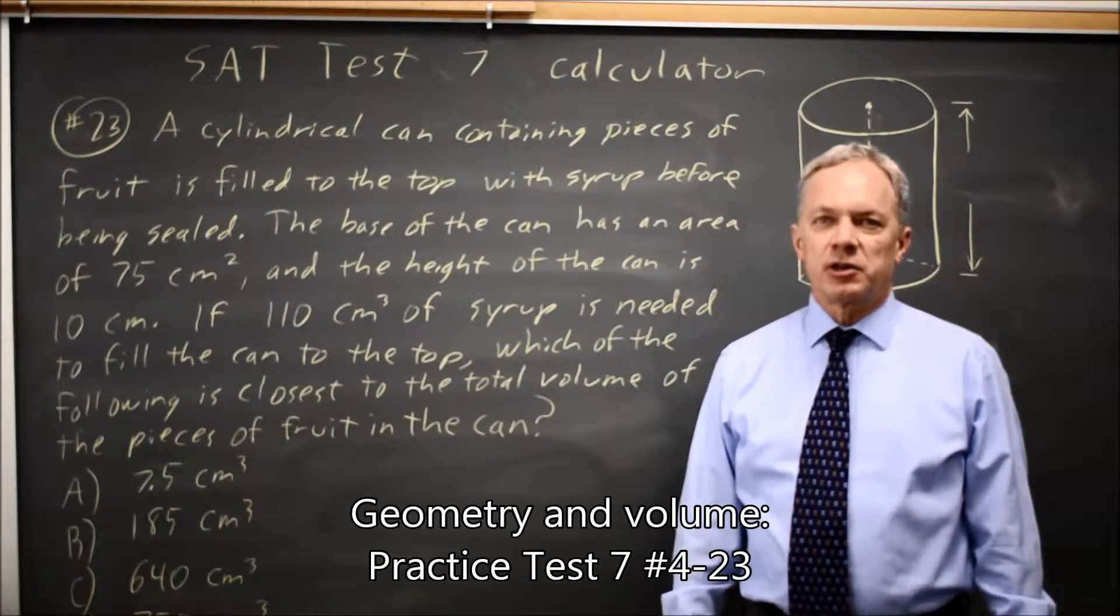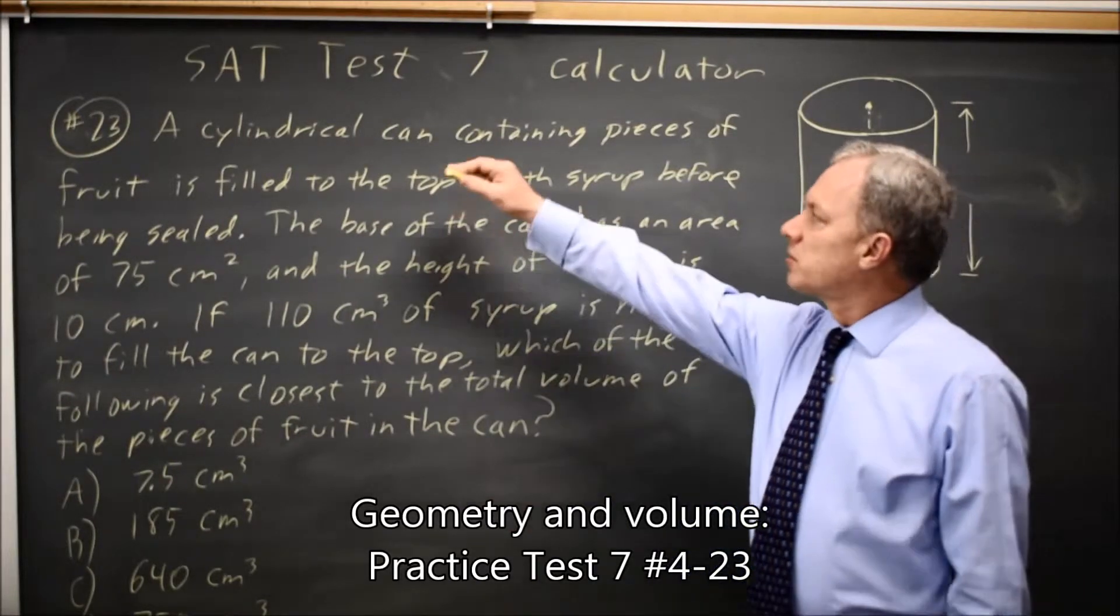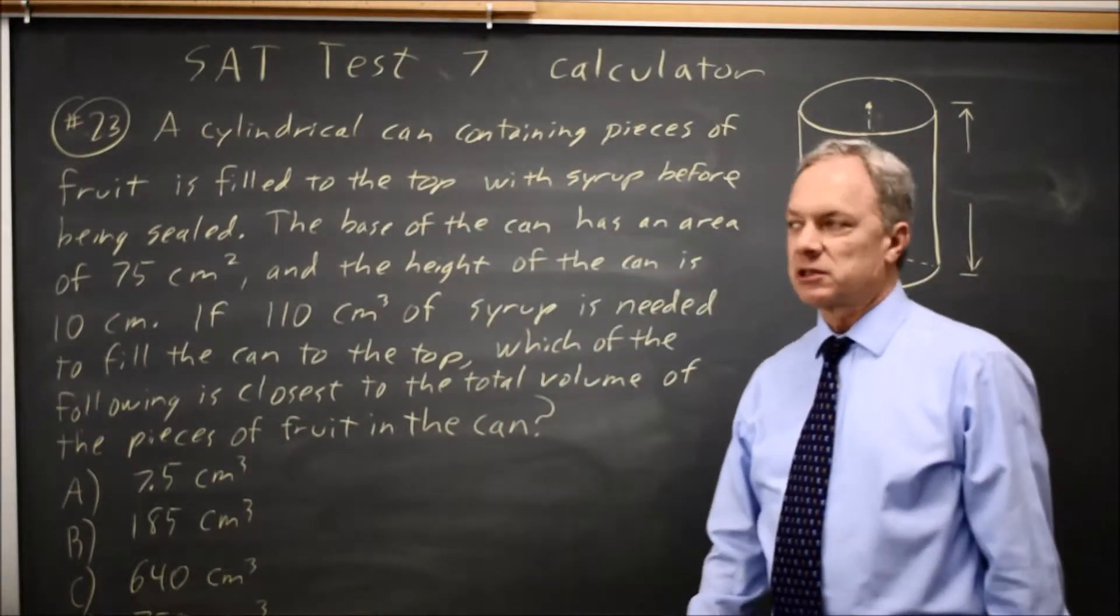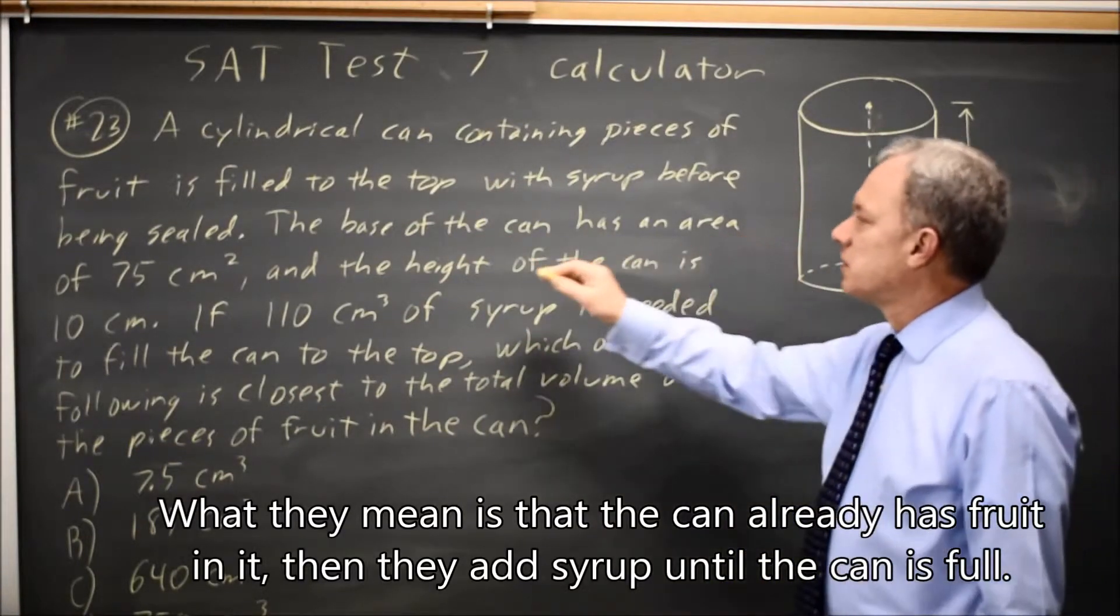This is SAT test 7, calculator question number 23. A cylindrical can containing pieces of fruit is filled to the top with syrup before being sealed. I've added the drawing of the cylinder.